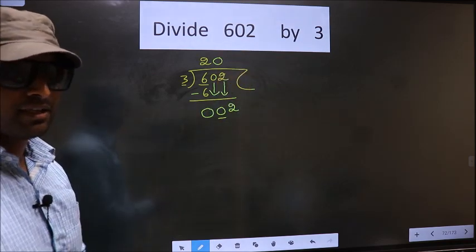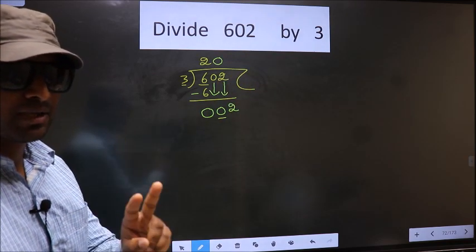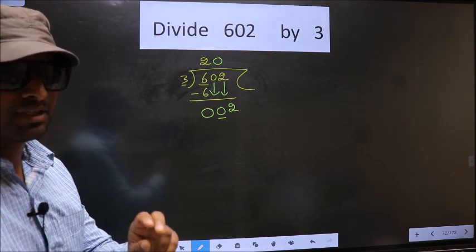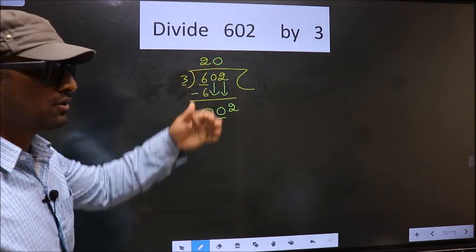I repeat: whenever you are bringing down 2 numbers at the same step, you should put 0 in the quotient.